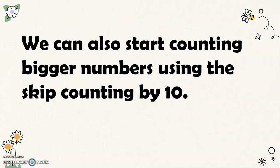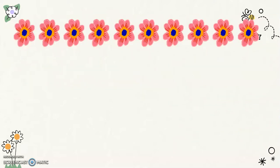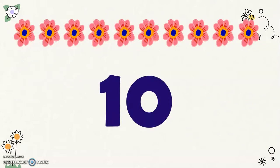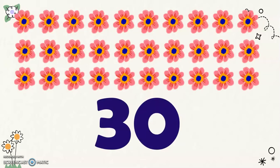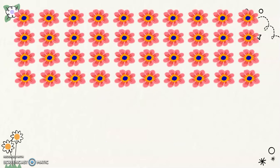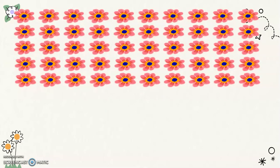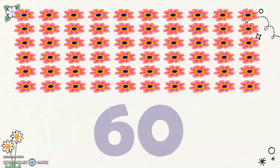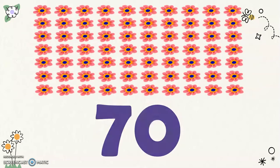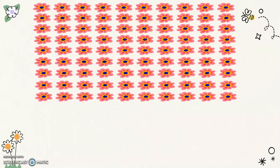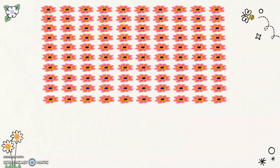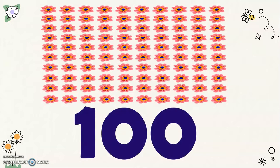We can also start counting bigger numbers using skip counting by ten. We have here ten, twenty, thirty, forty, fifty, sixty, seventy, eighty, ninety, and one hundred.